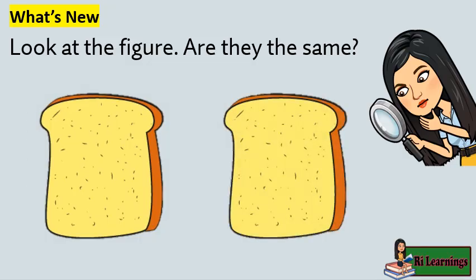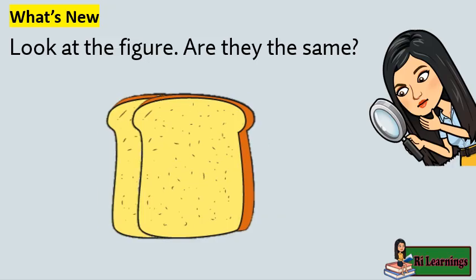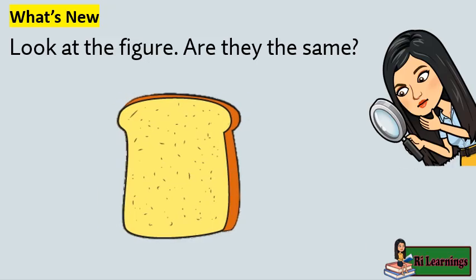If you place one slice of bread over the other, you will find that both slices are of equal shape and size. The two figures are said to be congruent figures. The term congruent means exactly equal in shape and size.